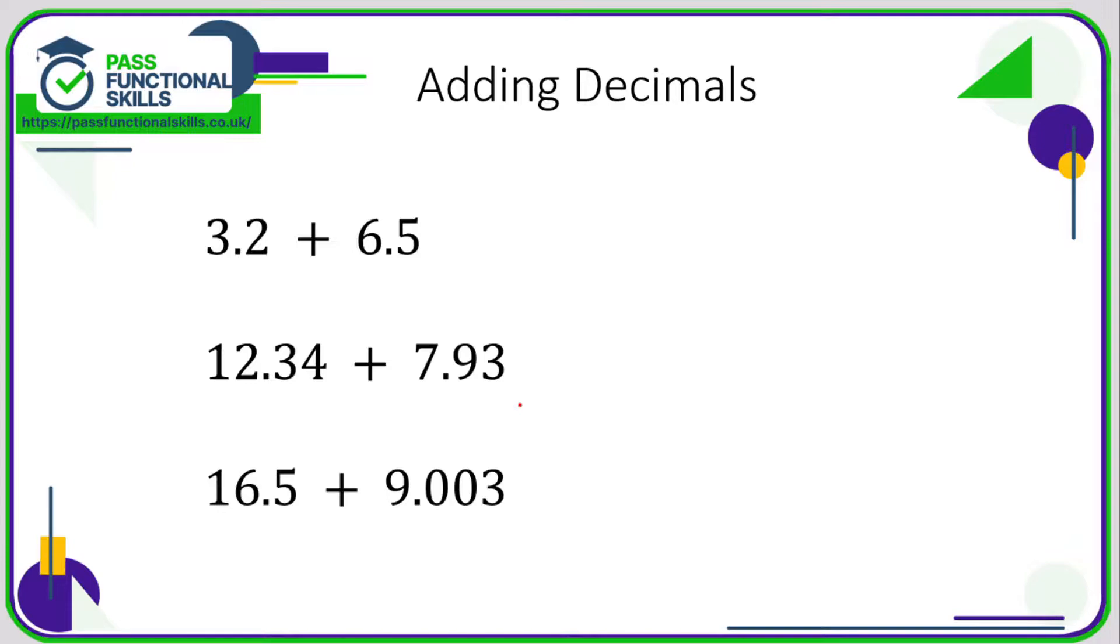Let's take a look at adding and subtracting decimals. If you can add 32 and 65, then you can definitely add 3.2 and 6.5. The key thing is to make sure that when you write it, the decimal points are in line.